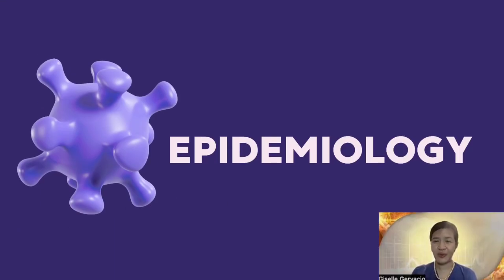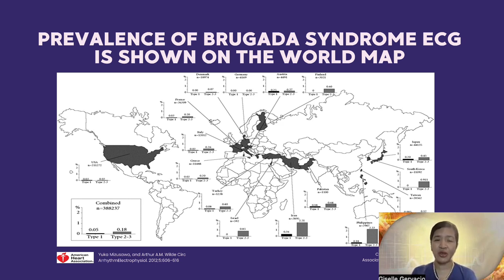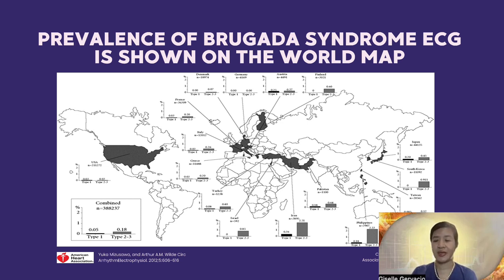Brugada syndrome has been described from different parts of the world. Our data have been included in a publication by Missusawa on the prevalence of Brugada syndrome worldwide. Overall, the type 1 and type 2 patterns are more common in the Philippines, with 2.23% showing the type 2 pattern and 0.18% showing the type 1 pattern. The type 1 pattern has a J-point and convex or shoulder morphology of ST elevation, whereas the type 2 pattern has a J-point and saddle-shape ST elevation. By definition, only the type 1 ECG pattern is diagnostic of Brugada syndrome.